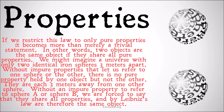We might imagine a universe with two identical iron spheres, three meters apart, without impure properties that let us refer to one sphere or the other. There's no pure property held by one object but not the other. They're each three meters away from the other sphere, and they have exactly the same properties in every other respect. Without an impure property to refer to sphere A or sphere B, we're forced to say that they share all properties and therefore by Leibniz's Law are in fact the same object. If we were to count the number of spheres in this universe, we would say there's only one in both a type and a token sense, which many people find deeply counterintuitive.